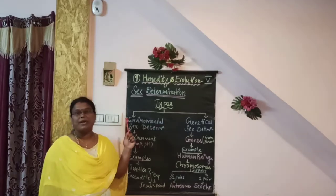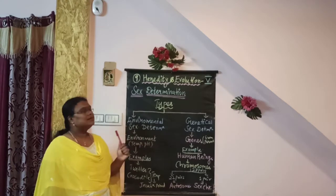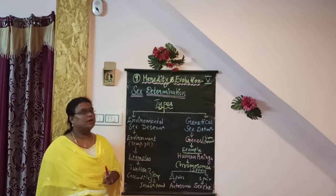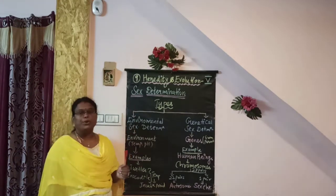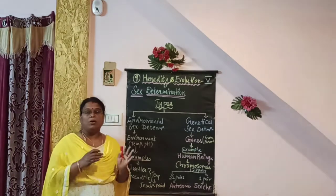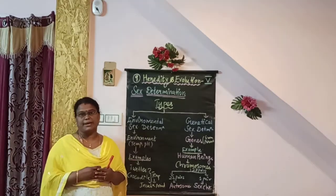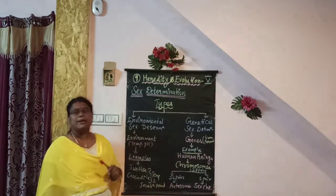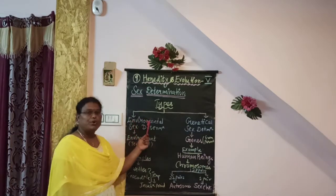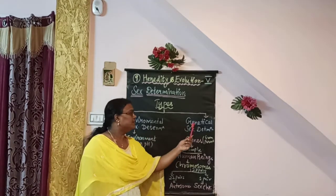Welcome back to Part 5, Chapter 9: Heredity and Evolution. In this video we are going to see sex determination in living organisms — how the gender, either male or female, of an offspring or child is determined. There are two types of sex determination in living organisms: environmental sex determination and genetical sex determination.